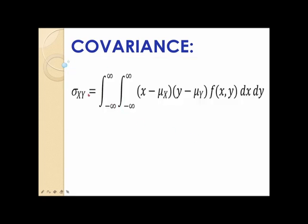If x and y are both continuous random variables, the formula for covariance is given by this equation. Sigma xy is equal to the double integral from negative infinity to positive infinity of the product (x minus mu of x) times (y minus mu of y) times the corresponding joint density f of xy, dx dy.